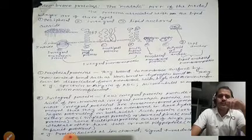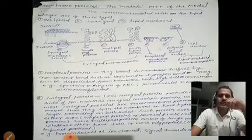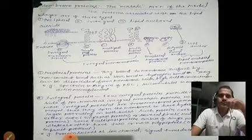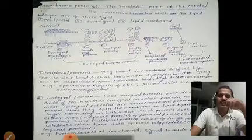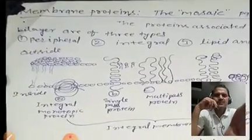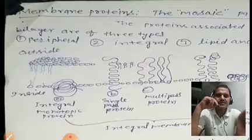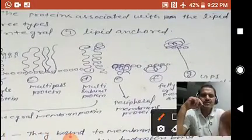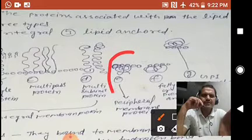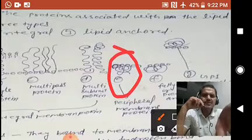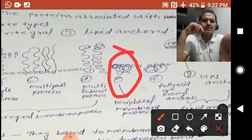The protein in the membrane can be divided into three categories. Peripheral proteins are on the outside of the membrane. For example, these are the peripheral proteins. This membrane is from the outside of the membrane.